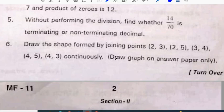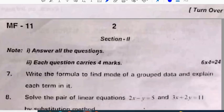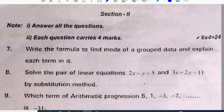Sixth question: draw the shape formed by joining the points (2,3), (2,5), (3,4), (4,5), (4,3) continuously. You can plot these points in the graph and check what shape is formed.